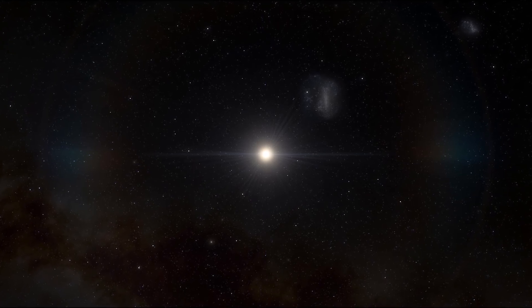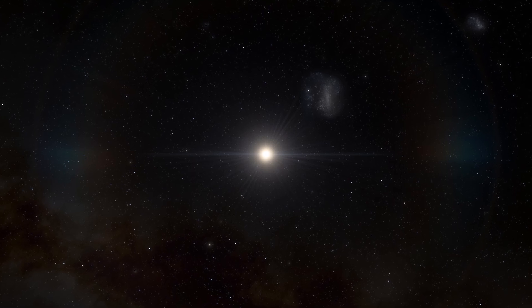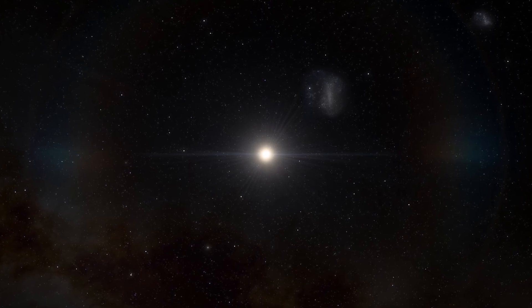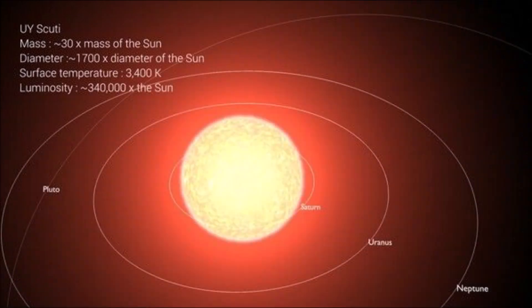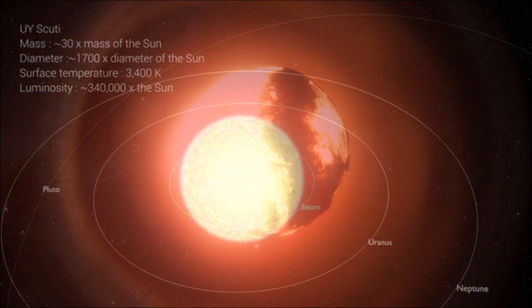You may have already heard this stat, but were you to place UY Scuti at the center of our solar system, its 7 astronomical unit excess diameter would engulf everything as far out as the orbit of Saturn. That's 5 planets, 82 moons, and the asteroid belt, all consumed by this one star.